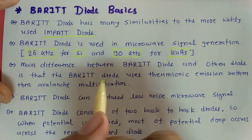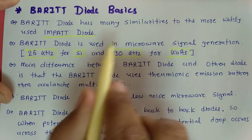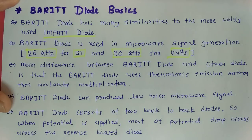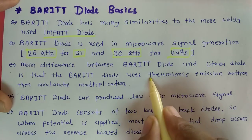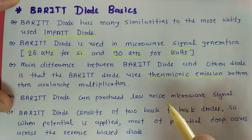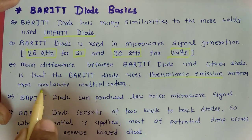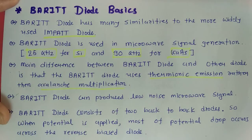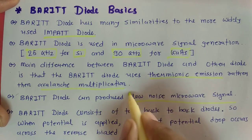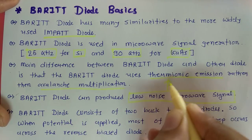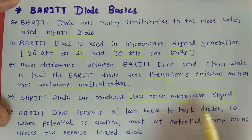So, 25 GHz and 90 GHz diodes are available with Barrier structure. The major difference between Barrier Diode and other diodes is that it works based on thermionic emission, while other diodes function on avalanche multiplication. In Barrier Diode there is no avalanche multiplication — it uses thermionic emission, and because of this, Barrier Diode produces a low noise microwave signal.